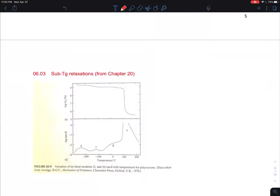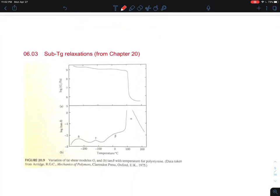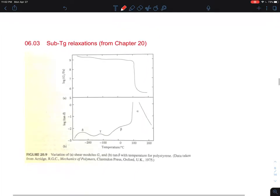I talked about sub-Tg relaxation and also sub-Tm relaxation, but the most important one is the sub-Tg relaxation from chapter 20. Here I'm just going to show you the shear modulus. This is shear modulus G in log scale, and this is temperature T.